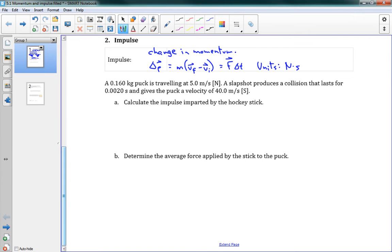So let's take a look at a couple impulse questions here. So our first one, it says a 0.16 kilogram puck is traveling at 5 meters per second north. A slap shot produces a collision that lasts for 0.002 seconds and gives the puck a velocity of 40 meter per second south. We want to calculate the impulse imparted by the hockey stick. So, hockey, cool. So we'll see what the impulse is for this guy. We'll use our first statement for impulse. So delta p is equal to m(vf minus vi). And we have all those measures. We have the mass, the mass is 0.160.